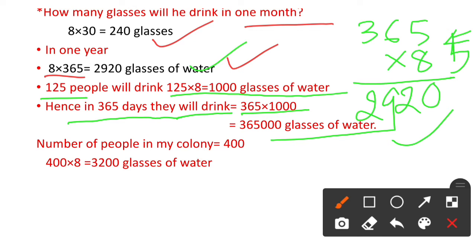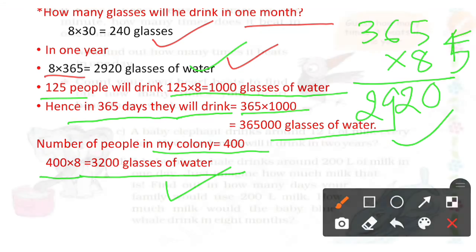Last question: can you guess how many glasses of drinking water are used in a day in your colony? I suppose that in my colony there are 400 people. 400 people, one day, one person will drink 8 glasses, so 400 × 8 = 3,200 glasses of water.